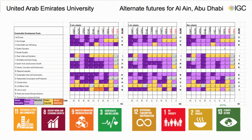We kept in consideration the global sustainable development goals, involving some of them as a guideline in our project. The results show that the most useful design has the most dark purple shape. Obviously, the early adopter design has the most dark purple shape. The design that best achieved the global sustainable development goals and is the best design for Al Ain City is the early adopter design.